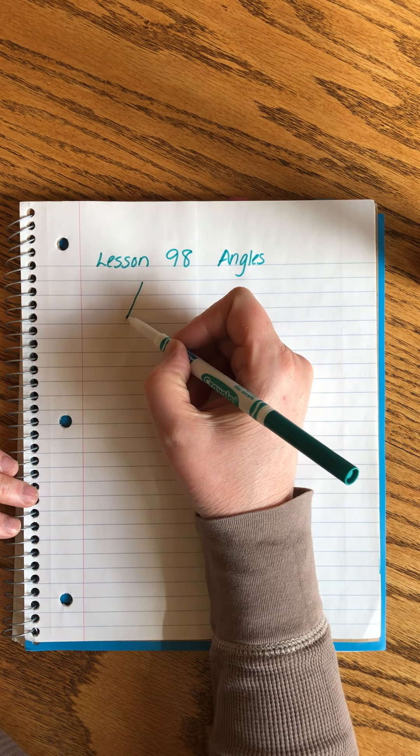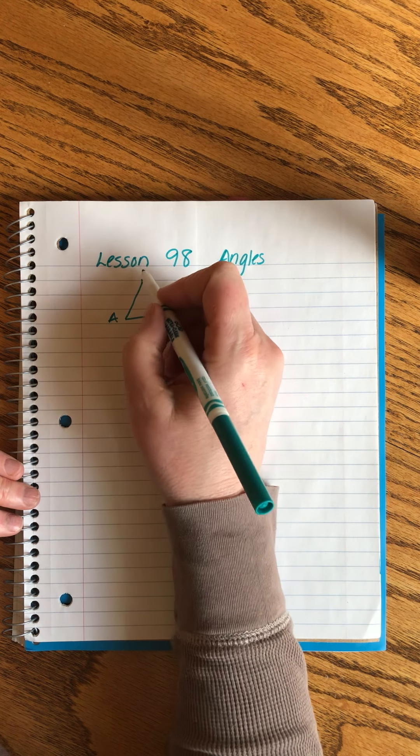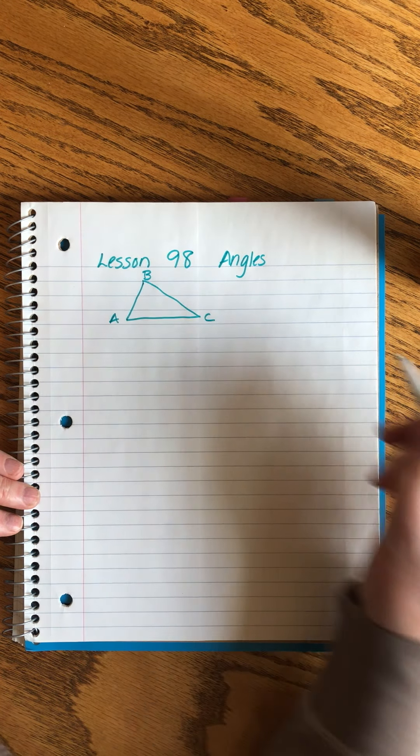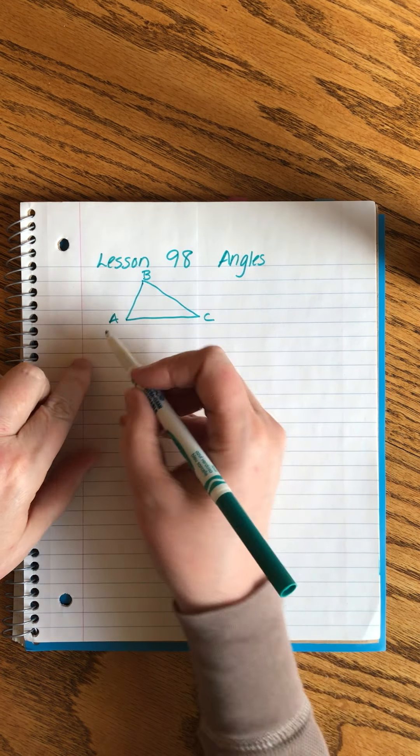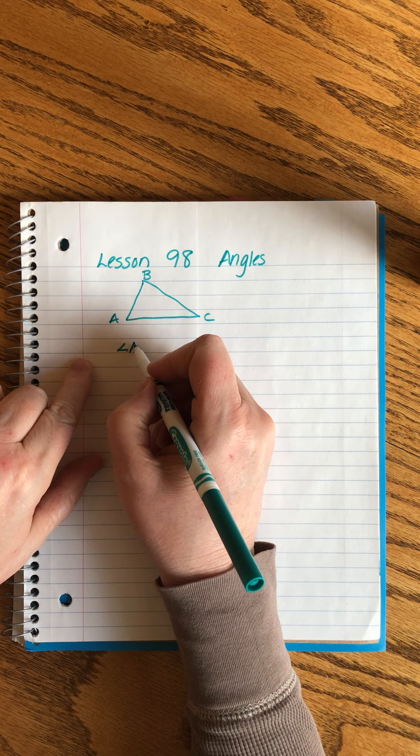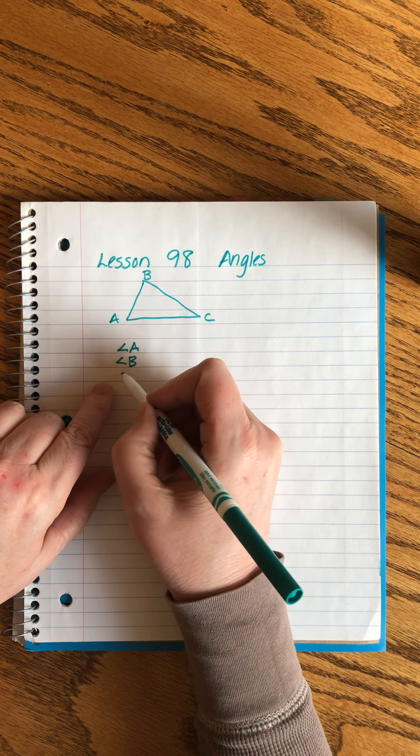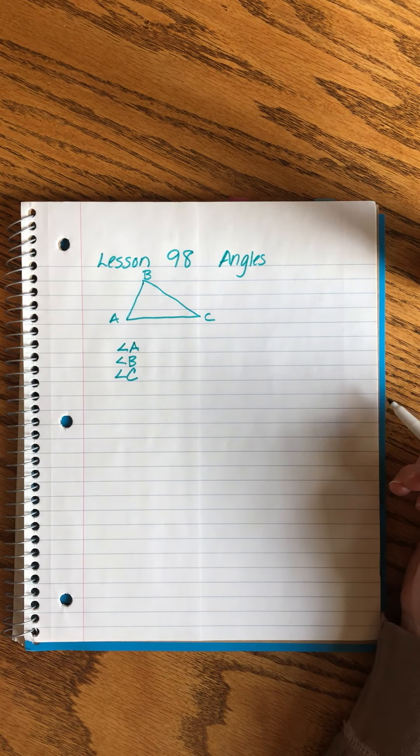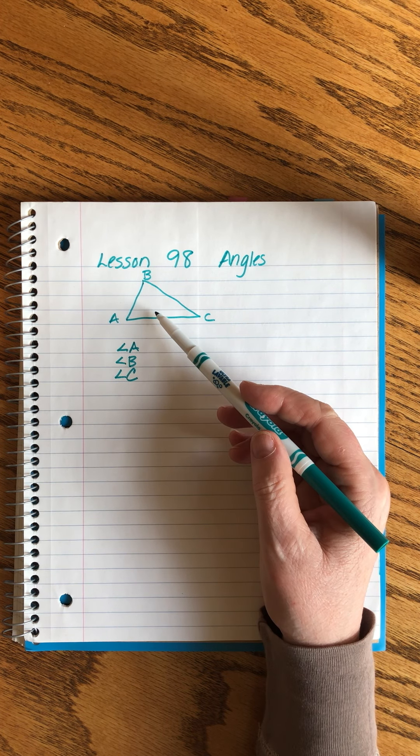Change it up from all of this algebra we've been doing. Just a little bit of concept and terminology review. Let's say we have a triangle that looks like this, and it has uppercase A, B, and C as a corner. That's normally the way we name our angles. We can write it as angle A, angle B, angle C. These are ways we can note angles.